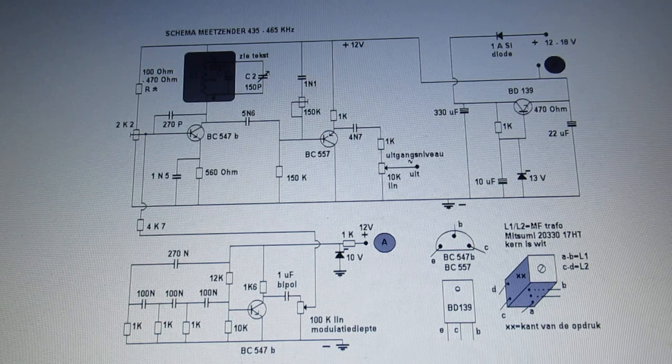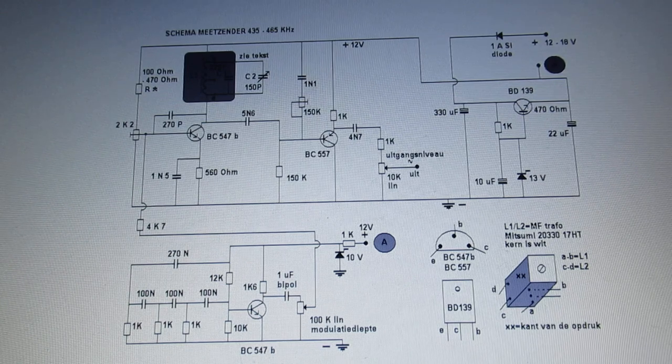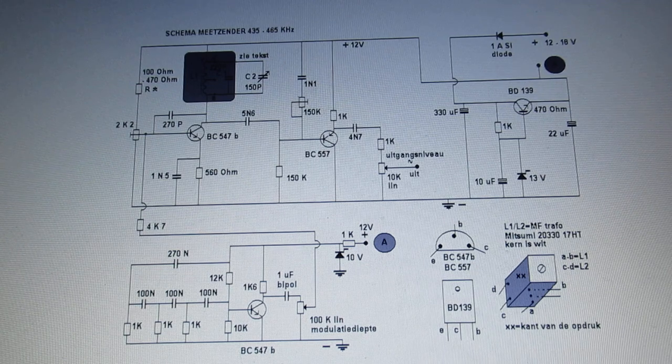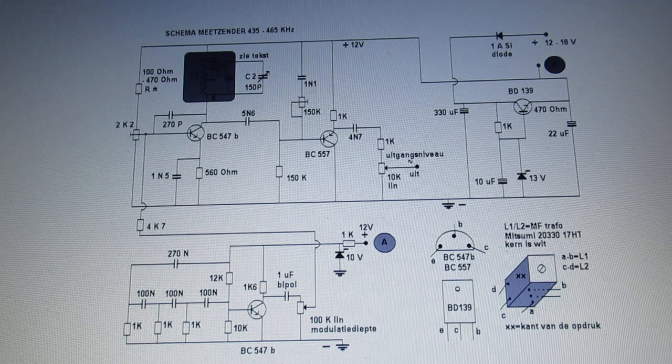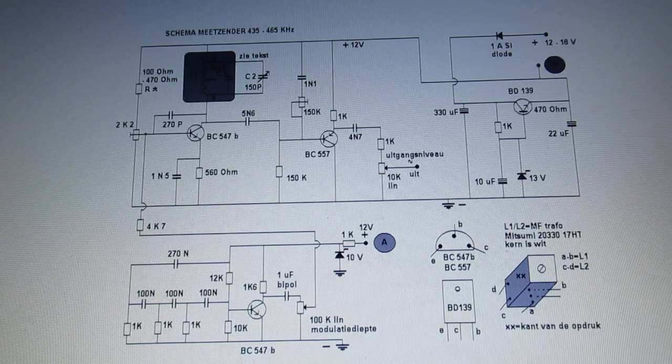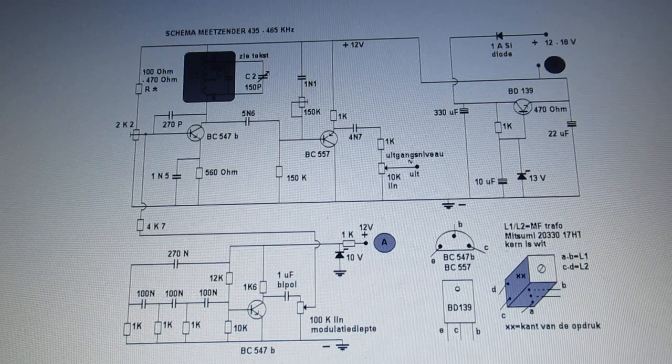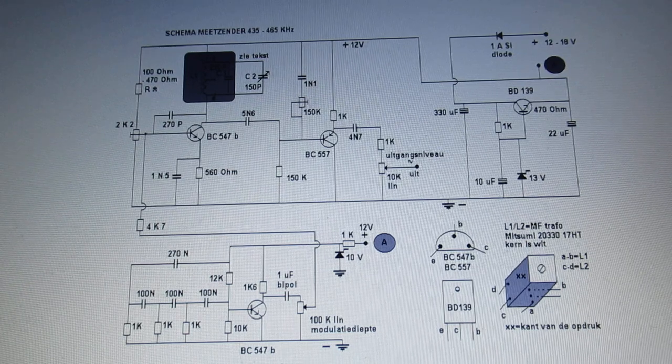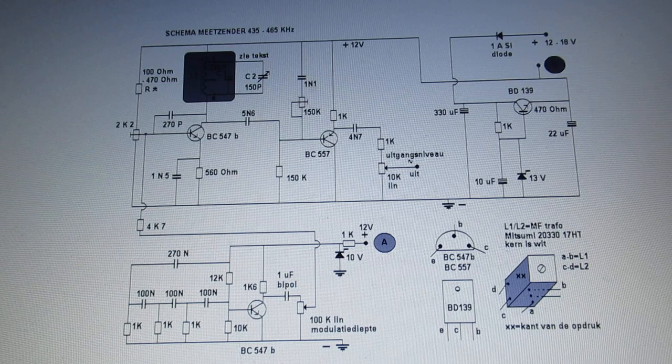At the output of your IF amplifier with the AM detector, when all is aligned well, you will hear a tone of about 1000 Hertz. The strength of that tone can be tuned up on all three filters to the maximum level, and then you know that your IF filter is properly tuned.